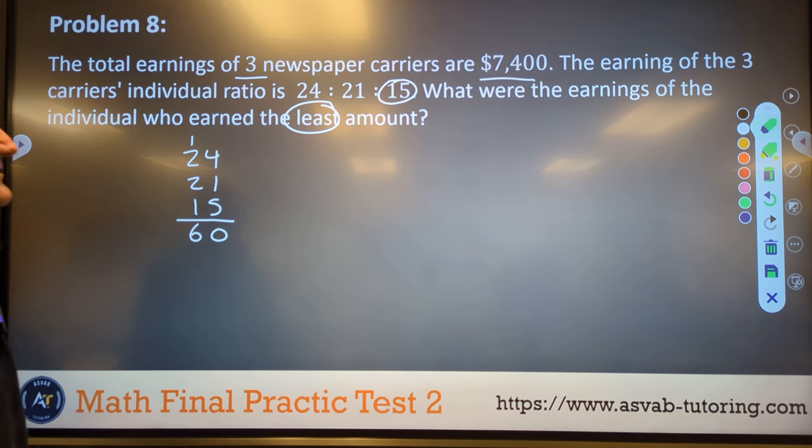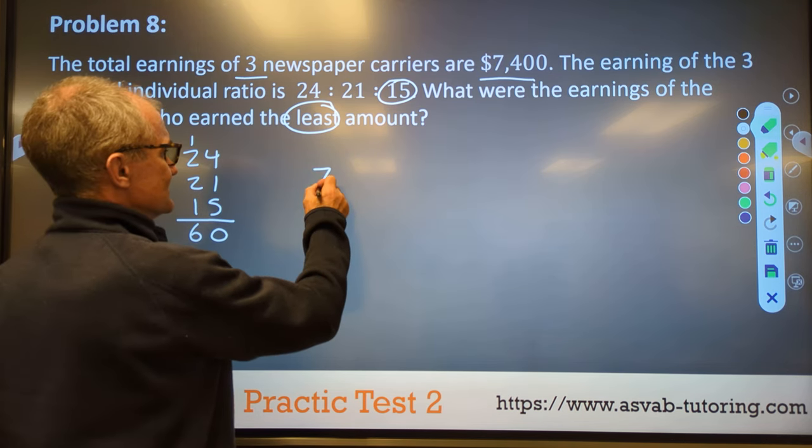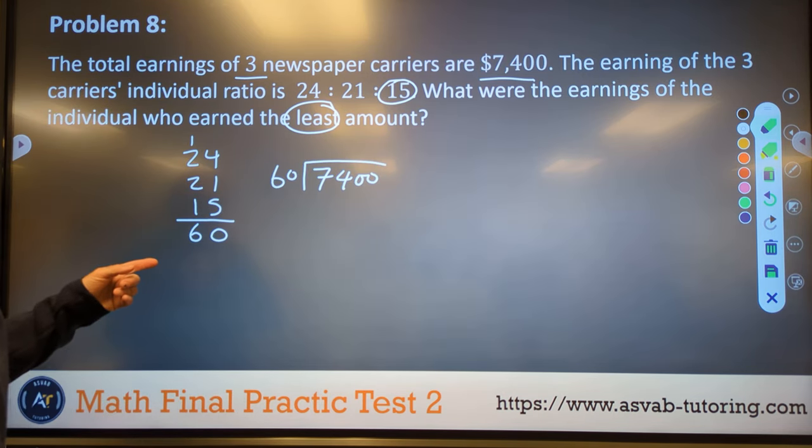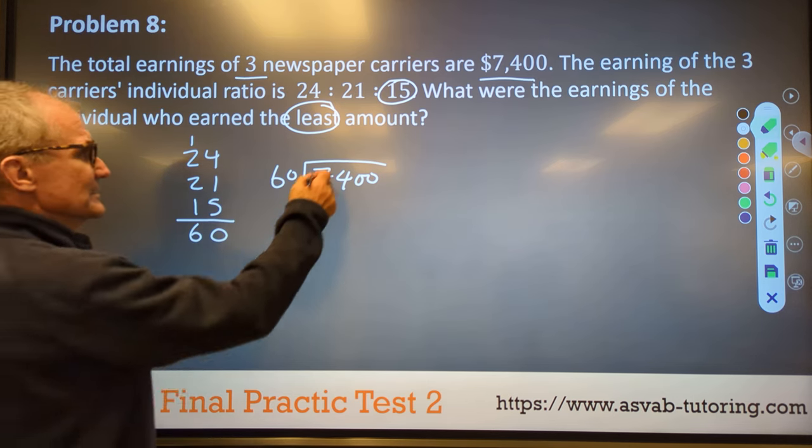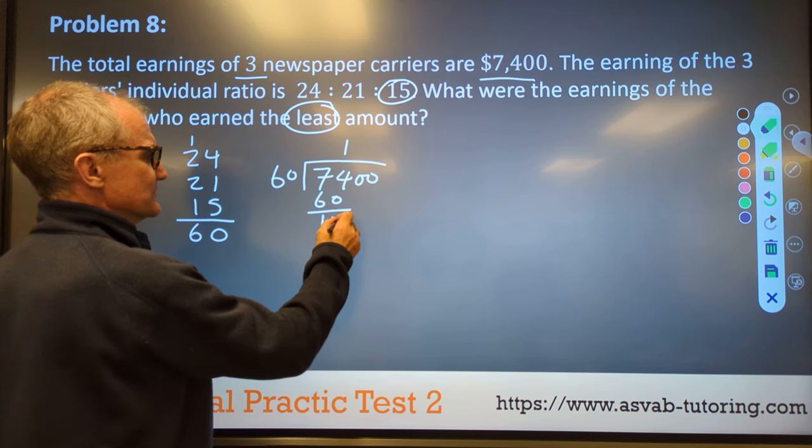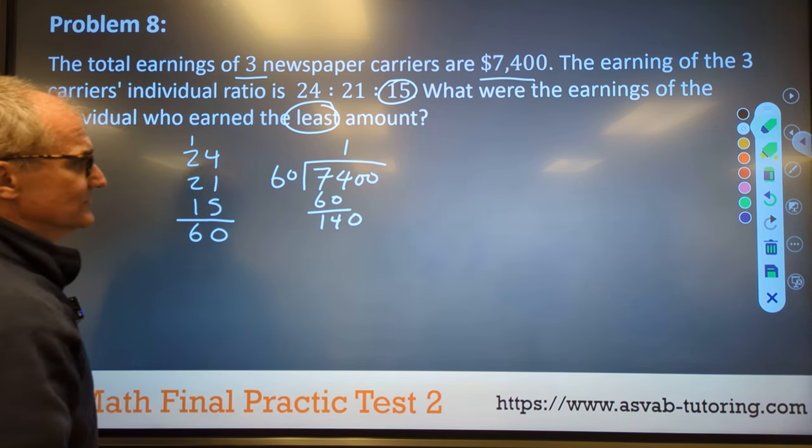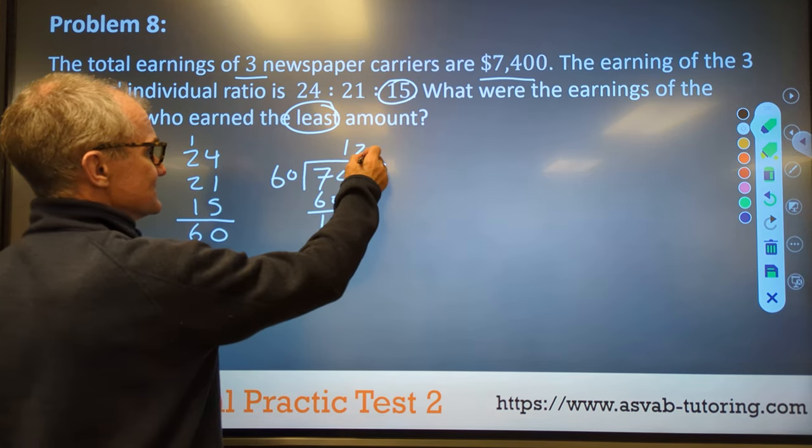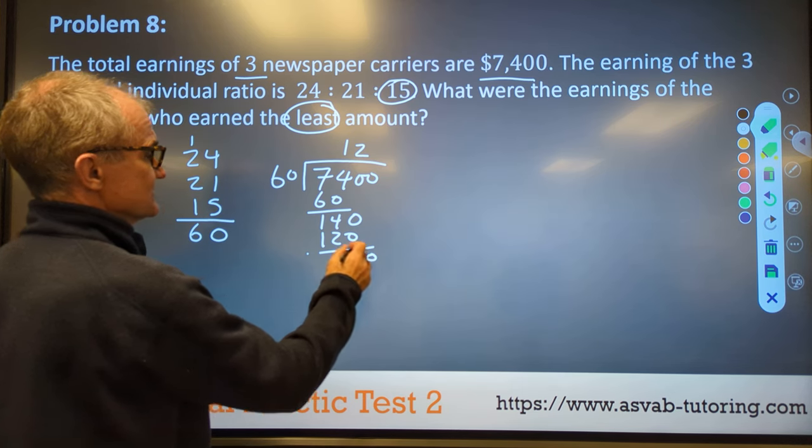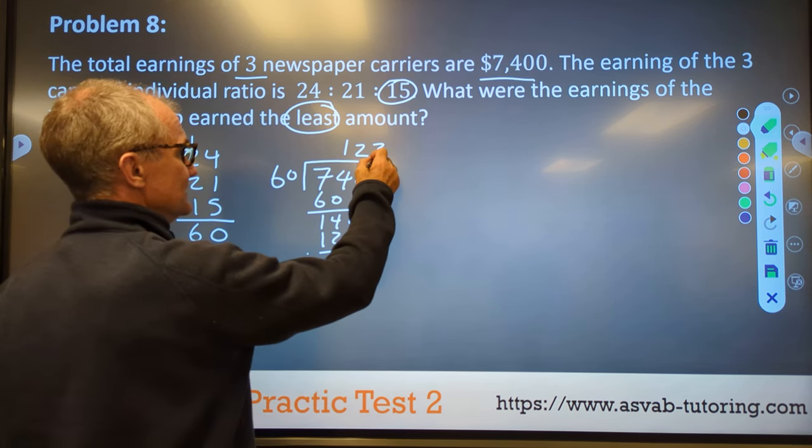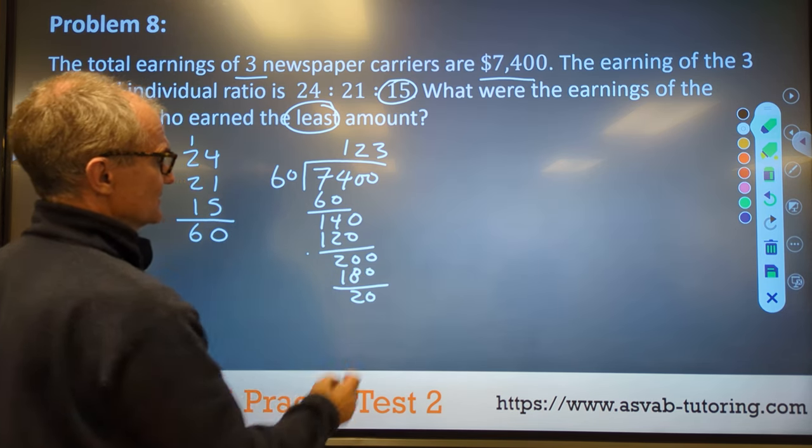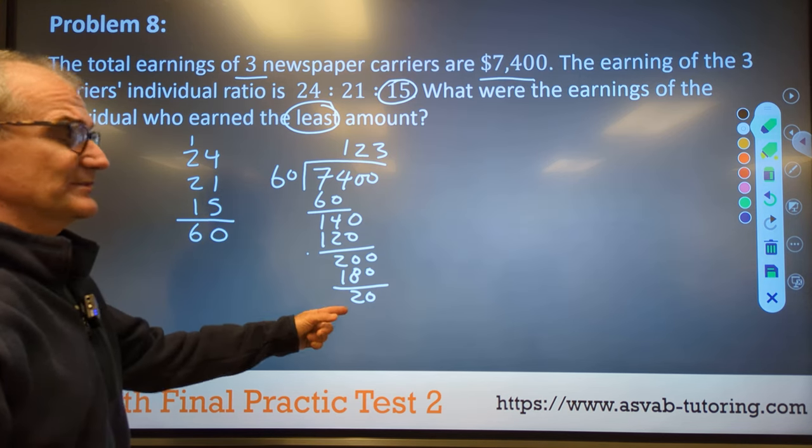So the total of those three ratios is 60. And then I've got to do 60 into $7,400, right? So each little part is one little part of 60. So I'm going to do 60 into $7,400. 60 goes into $74 one time. $74 minus $60 is $14. Bring down the $0. $60 into $140 twice. That gives me $120. Bring down the $0. $60 into $200 is $3.